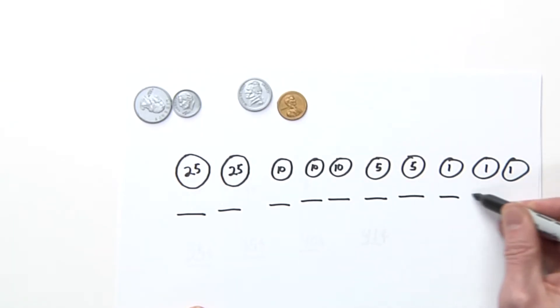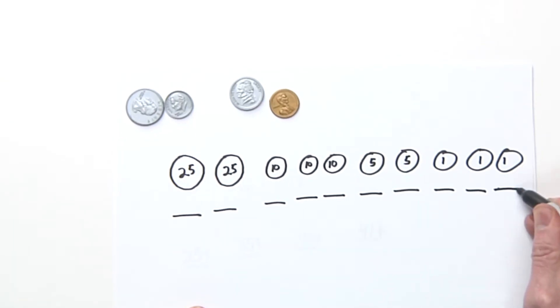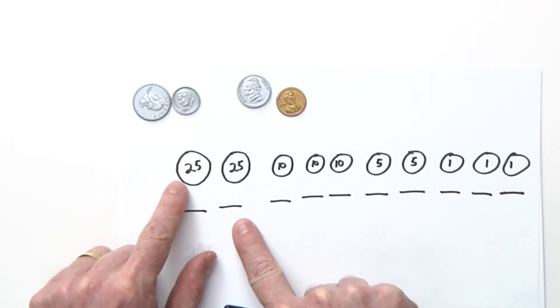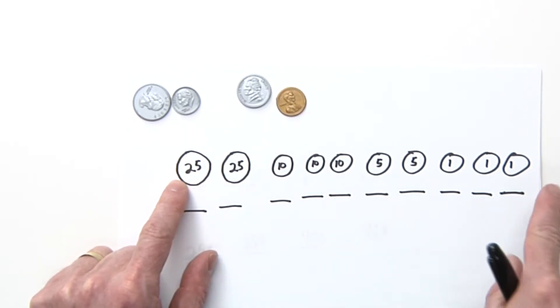It's kind of a fun exercise, and you can get together with another student and make up some things too. But remember, it's always important to have the largest coin, the one with the most value, on that side of the paper, on this side of the paper starting there, and then you work down.